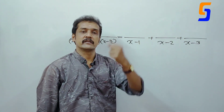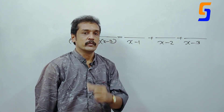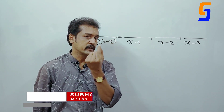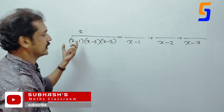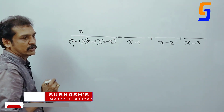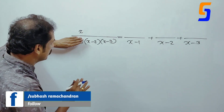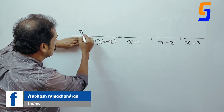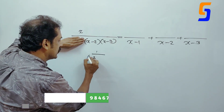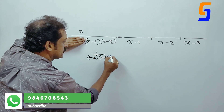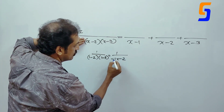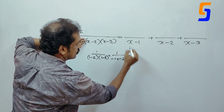Now the numerator is the answer. Numerator number one is 0. First bracket x minus 1: x minus 1 is 0, so x is 1. This is 1 by 1 minus 2, minus 2 into 1 minus 3. That is 1 by 1 minus 2, minus 1. 1 minus 3 is minus 2. That is 1 by 2.